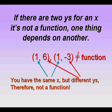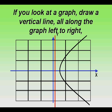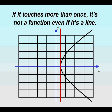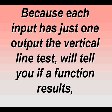One thing depends on another. If you look at a graph, draw a vertical line all on the graph left to right. If it touches more than once, it's not a function. Because each input has just one output, the vertical line test will tell you if a function results.